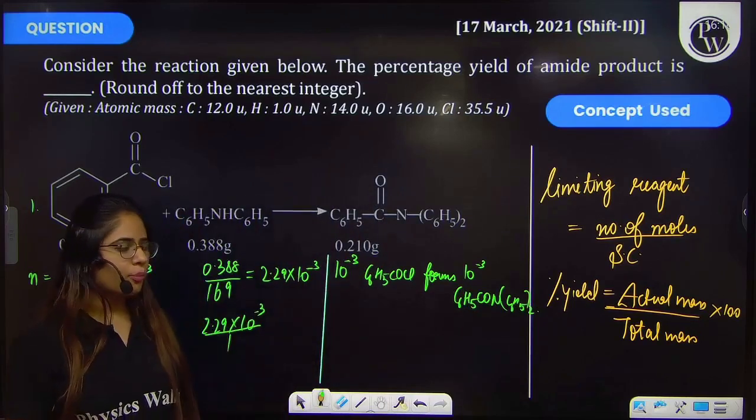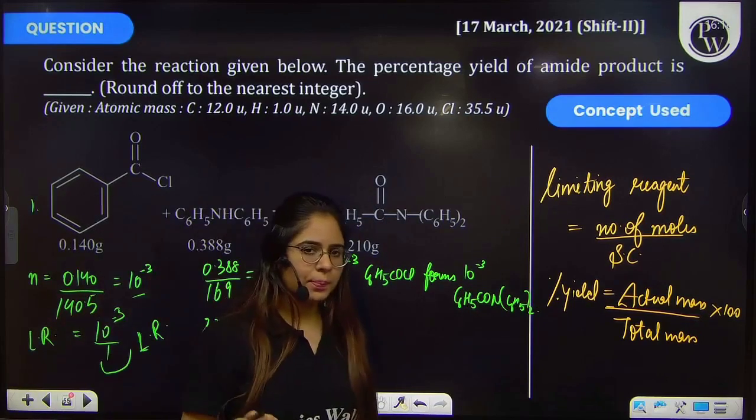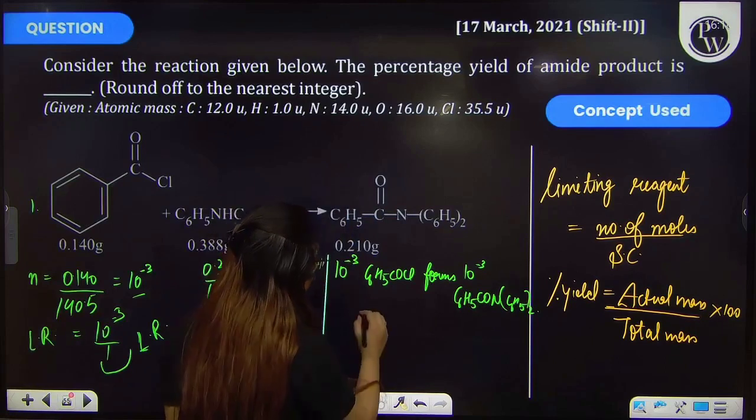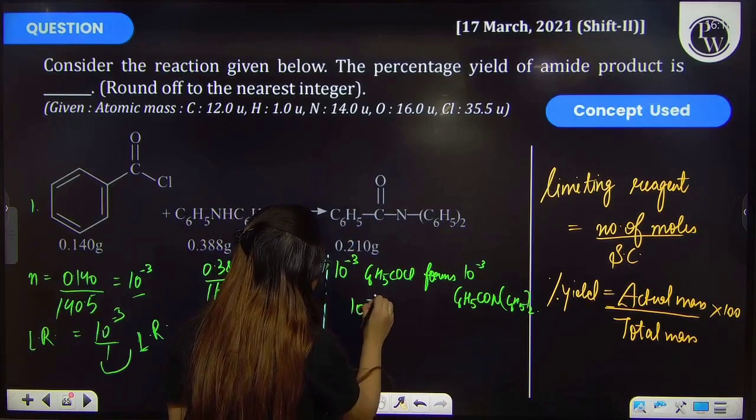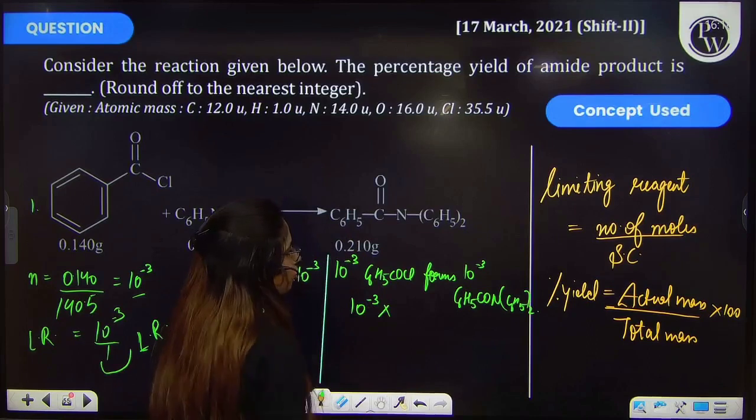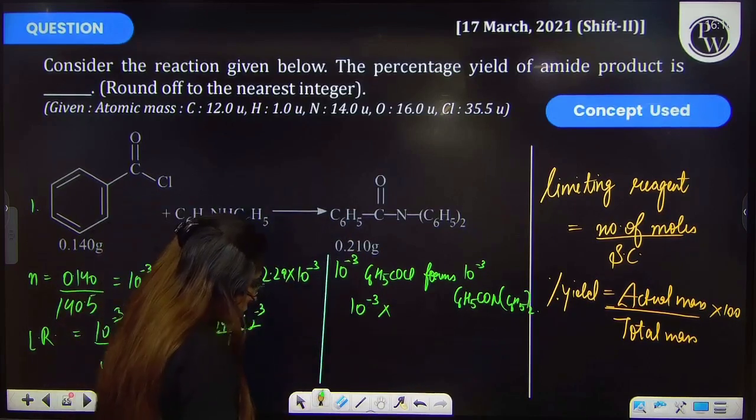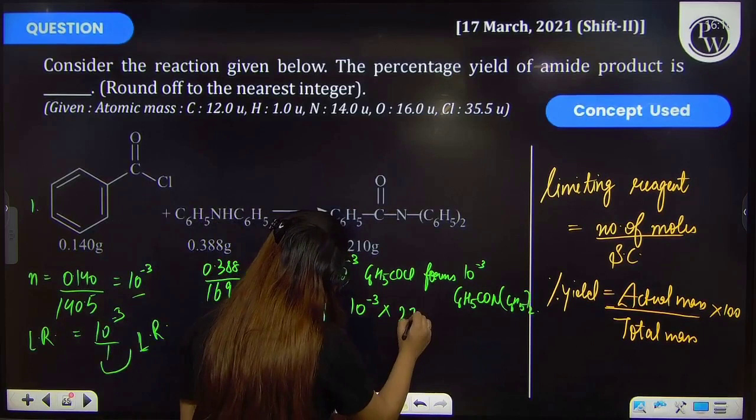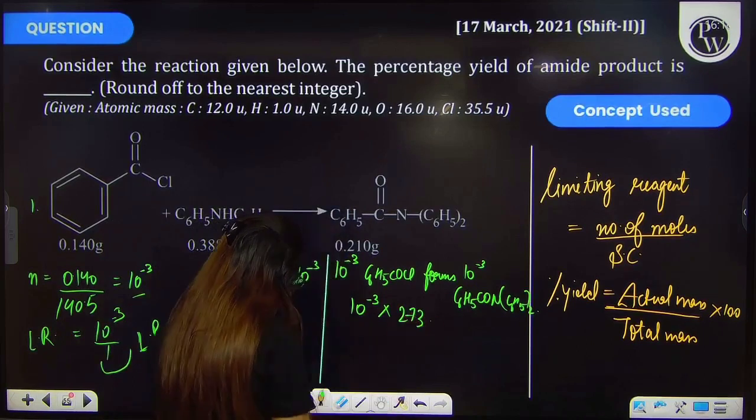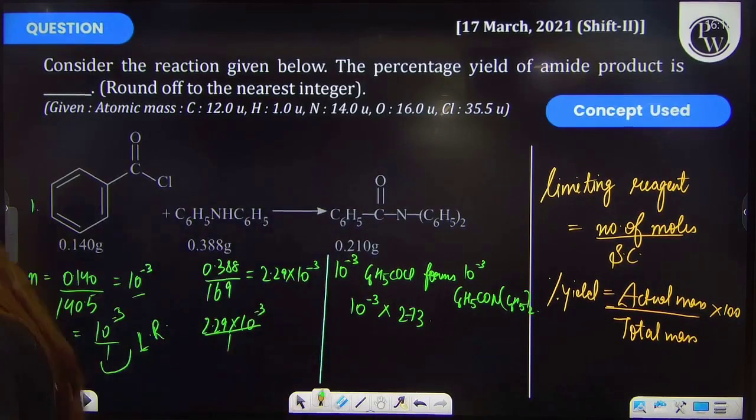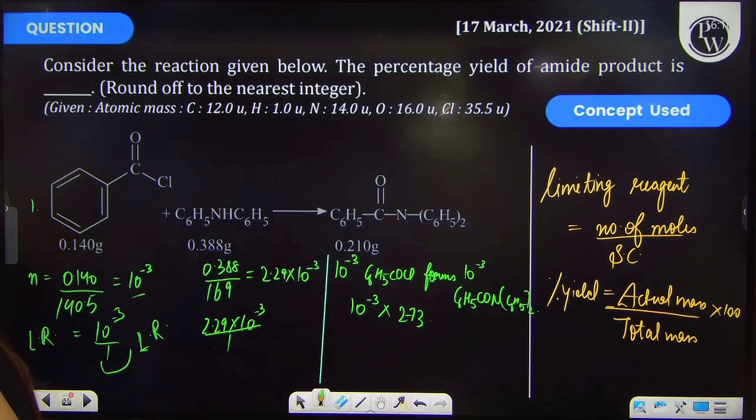But what is the number of moles? We have to calculate the mass. So that will be equal to 10 × 10^-3 into molar mass. Molar mass of this compound is 273 gram per mole. Right?